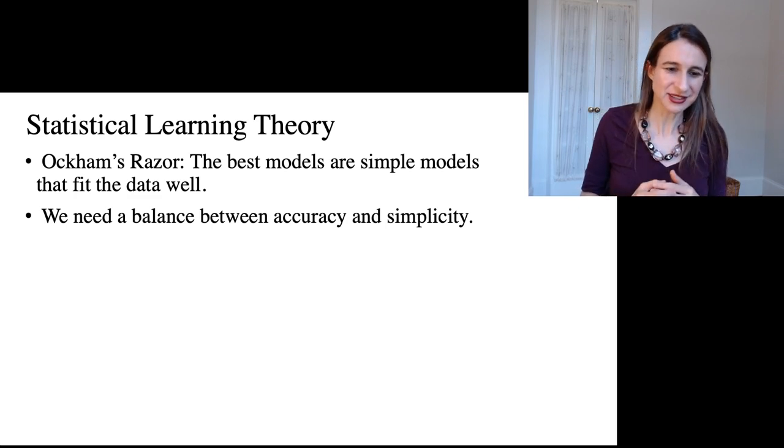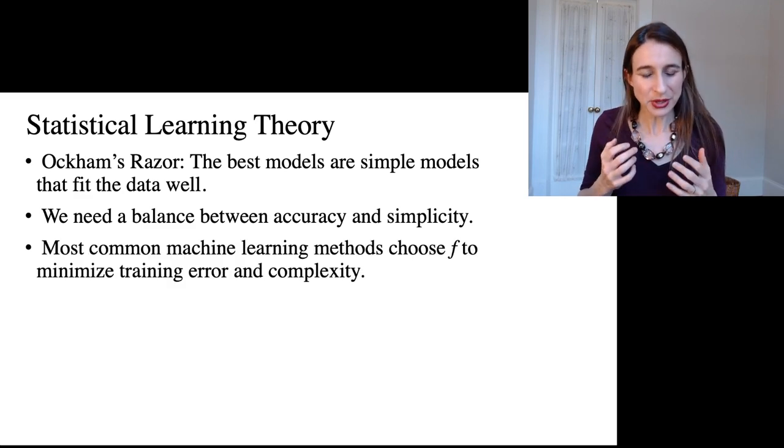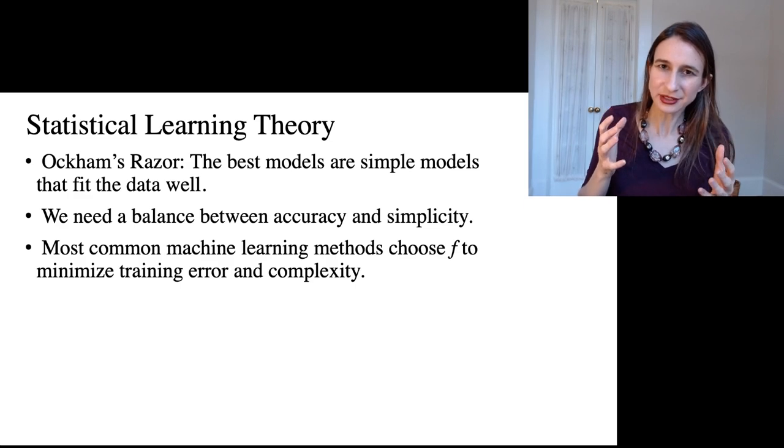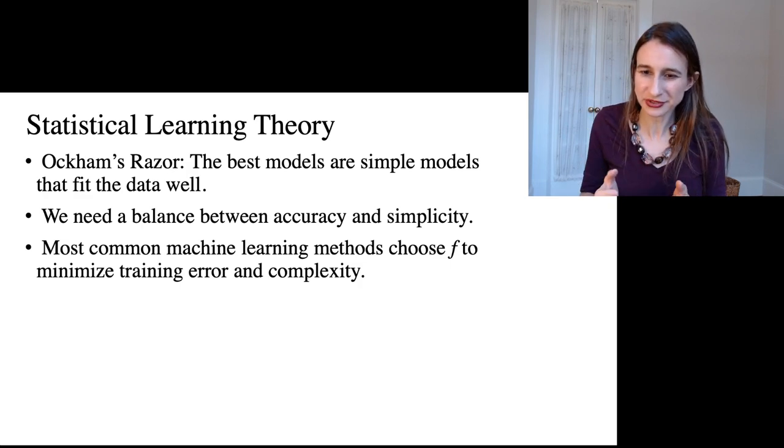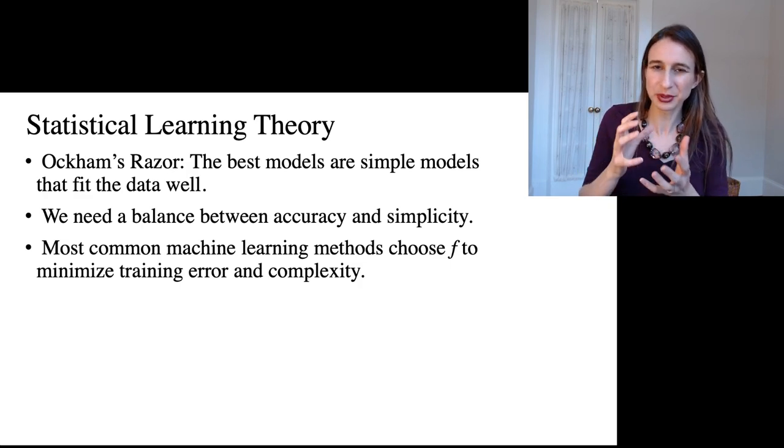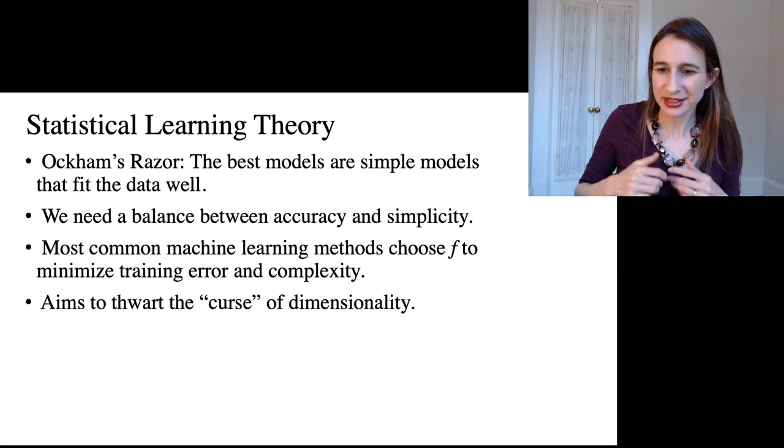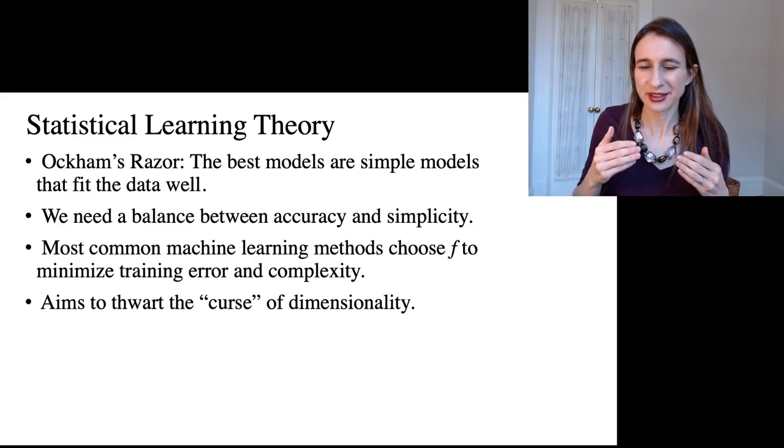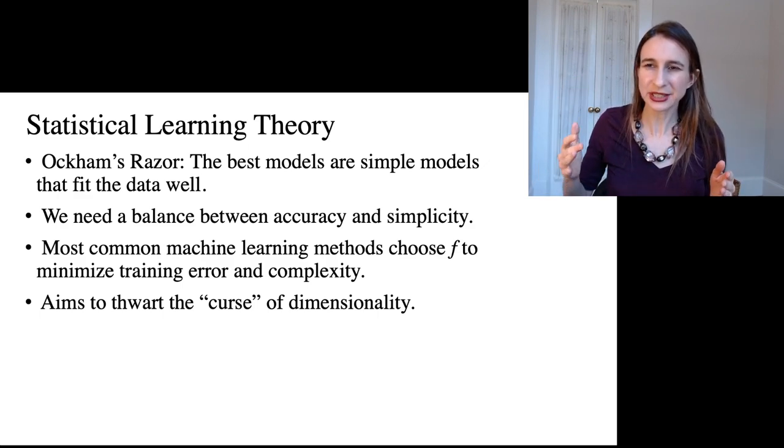And so it's telling us that we need a balance between accuracy and some quantified notion of simplicity. So the most common machine learning methods choose the function F to minimize training error, but they also minimize some level of complexity, some quantified version of complexity. So complexity and simplicity are sort of two sides of the same coin. And then also the idea of trying to minimize complexity helps to thwart the curse of dimensionality. The curse of dimensionality is the notion that as you increase the number of features in your dataset, the problem becomes exponentially harder.